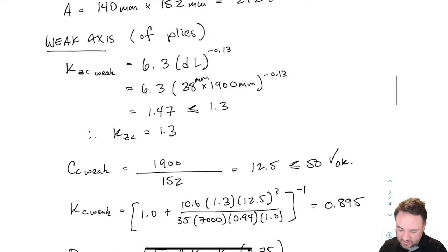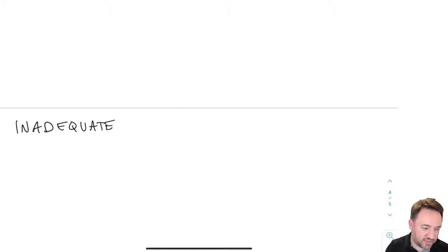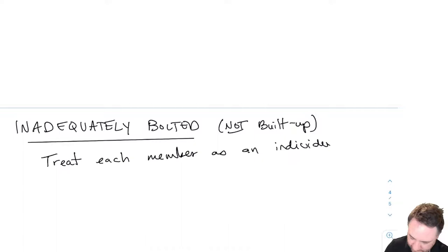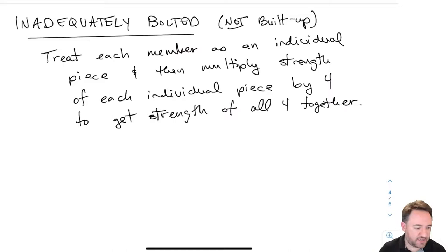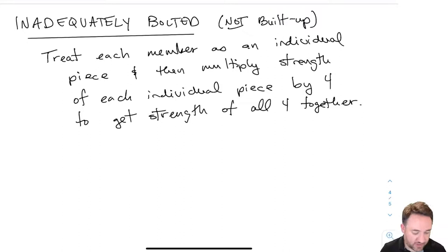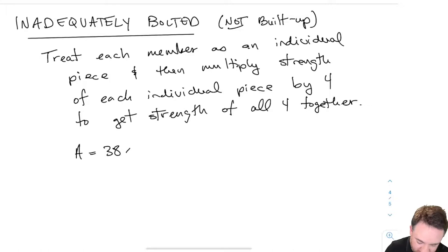Now let's repeat this process for inadequate bolting. Here we consider each section as an independent individual member. We calculate the strength of one member and multiply by four. The kh of 1.10 still applies, but now the cross-sectional area is just for a single member: 38 × 140 = 5,320 mm².